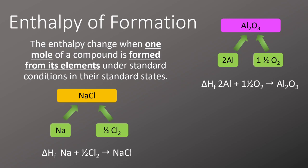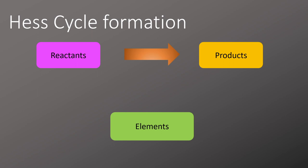When answering questions on Hess's law we can often draw a Hess cycle to show the chemical reactions taking place. We start with our chemical reaction where the reactants are turning into products and for formation we place the elements at the bottom and show the formation reactions taking place to form both the reactants and the products with arrows. This forms our alternative route.